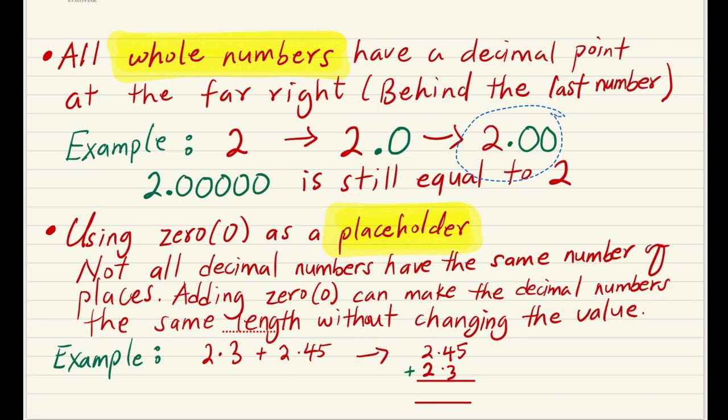The second point is that we have to learn to use placeholders, and for placeholders we normally use zero. Not all decimal numbers have the same number of decimal places. Adding zero can make the decimal numbers the same length without changing the value. To explain this, I'm going to use an example so you understand exactly what I'm talking about.